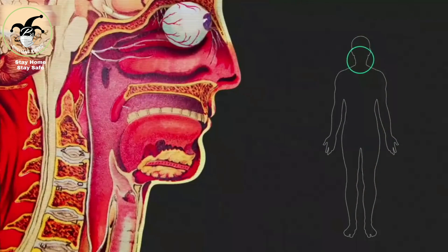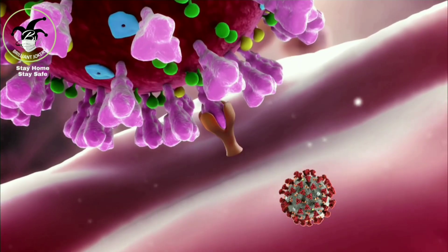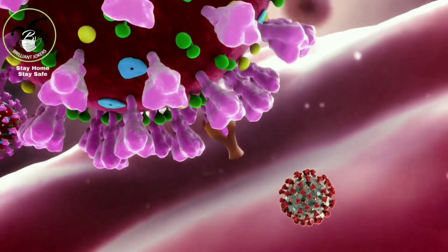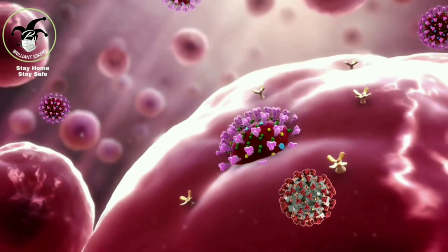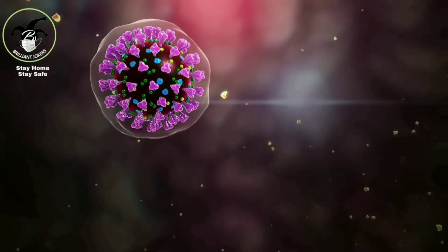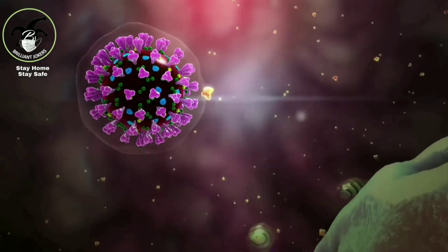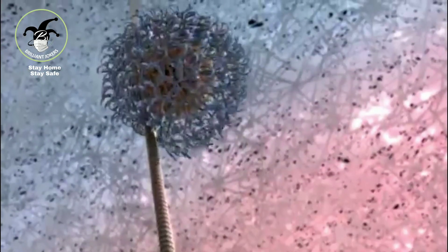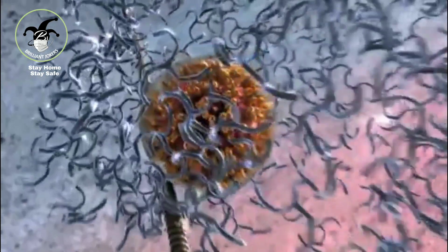Once the coronavirus gets entry into our body, it goes and binds to the ACE2 receptor. After attaching to the ACE2 receptor, it enters into a cell. After entering into a cell, its outer membrane is going to degrade by an acidification reaction to release its genetic material called ssRNA.